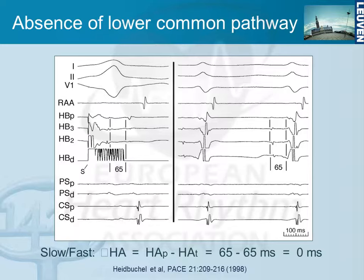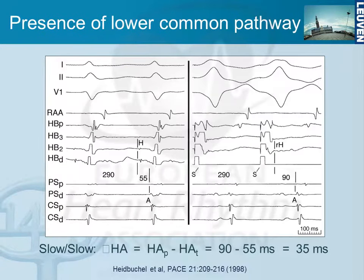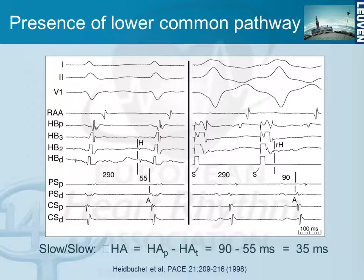Comparing HA during pacing and HA during tachycardia at the same cycle length: here we have tachycardia on the right, HA measured from beginning of HIS bundle deflection to beginning of atrial deflection is 65 milliseconds. With pacing at exactly the same cycle length, HA measured from the most proximal HIS bundle deflection to the beginning of the same atrial deflection is again 65 milliseconds. The difference — delta HA — is zero milliseconds, meaning there is no lower common pathway. In contrast to older textbooks, typical AVNRT has no lower common pathway; the turnaround point is exactly where it connects to the HIS bundle. In another example with short HA of 55 milliseconds during tachycardia but 90 milliseconds during pacing, the delta is 35 milliseconds — there is a lower common pathway — and earliest atrial activation is in the inferior septum, the proximal coronary sinus, consistent with atypical AVNRT.